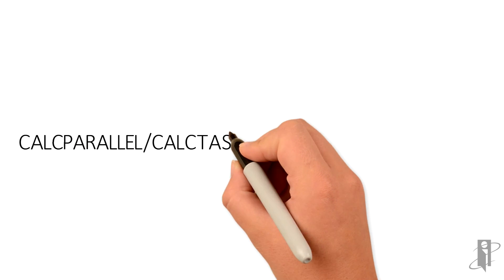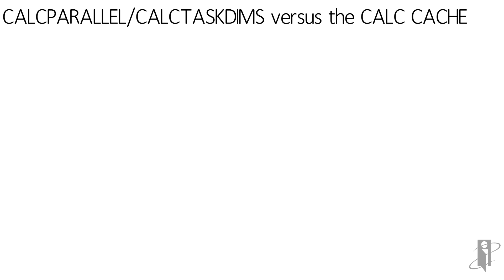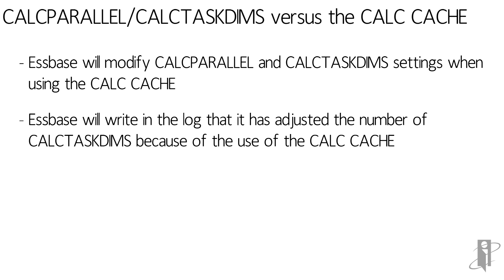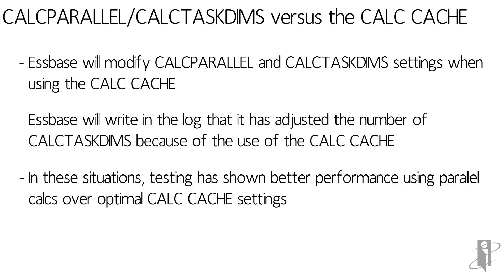There's a conflict that can occur between the Calc Parallel and Calc Task DIMMs settings and the Calc Cache settings. If you are trying to use the S-Space calculator cache, which in some cases can be a good thing, S-Space will actually look at your Calc Parallel and Calc Task DIMMs and modify them to better take advantage of the Calc Cache — and it will write in the log that it fiddled with your Calc Task DIMMs. In general, parallel calculation is much more important than optimizing the Calc Cache. If you're optimizing for Calc Cache, you're probably putting fairly large sparse dimensions at the end of your outline. If you're optimizing for parallel calculation, you're putting non-aggregating sparse dimensions at the end, like scenario or version. Just be aware: if you try to optimize for both, you're going to mess everything up. So pick — do you want to optimize for parallel Calc by setting Calc Parallel and Calc Task DIMMs without using the Calc Cache, or are you going to try to get the best possible Calc Cache, which means you're probably compromising your parallel calculation?